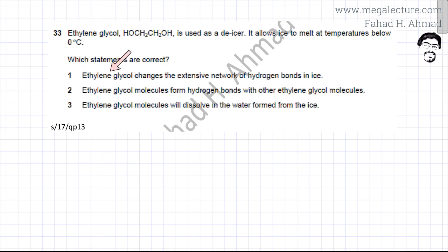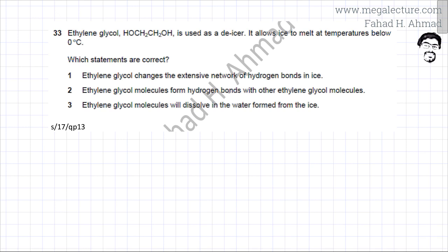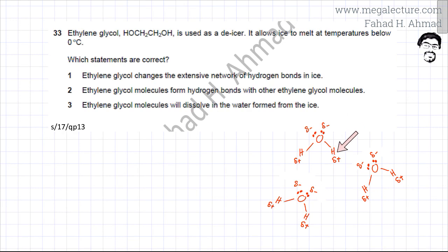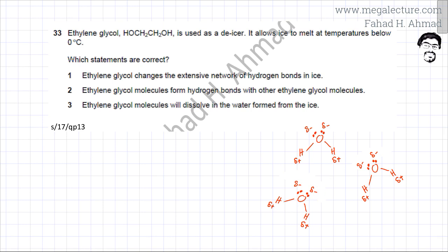The first statement is that ethylene glycol changes the extensive network of hydrogen bonds in ice. Let's focus on this network and first try to figure out what is the structure of ice and how the molecules of ice are arranged. Here I have shown some water molecules. Water is a polar molecule — the hydrogen has a partial positive charge and the oxygen, being more electronegative, has a partial negative charge. The lone pairs on oxygen also increase the charge density of this negative charge. So water molecules attract each other by hydrogen bonds — the partial positive hydrogen will be attracted to the lone pairs of the other water molecule.